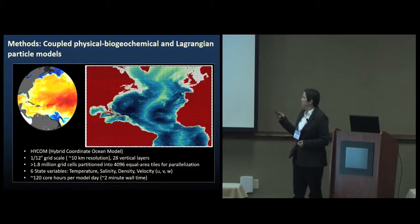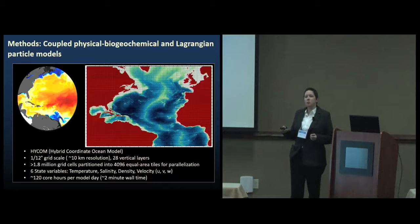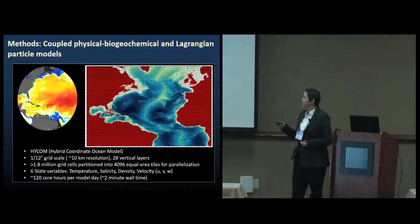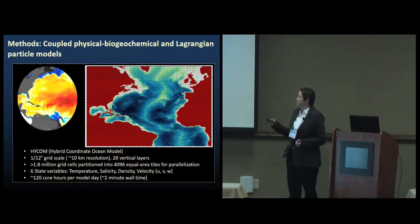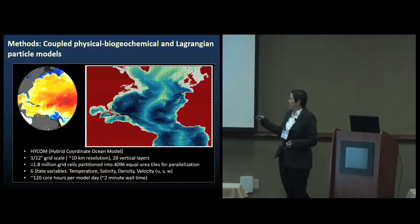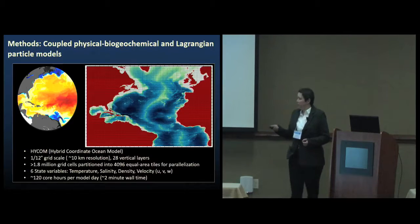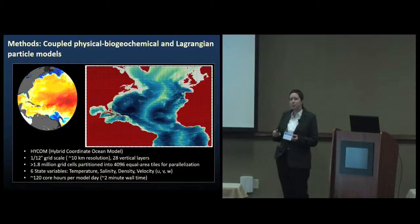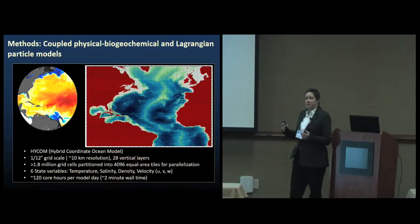I've ended up partitioning these into quite a few equal area tiles. I tried a pretty modest domain decomposition when I started running this model on Blue Waters and ran into some memory issues. So by doing a bit more partitioning, I'm running on 128 nodes, and it works quite well. This is accounting for the temperature, the salinity, the density, and the velocities.